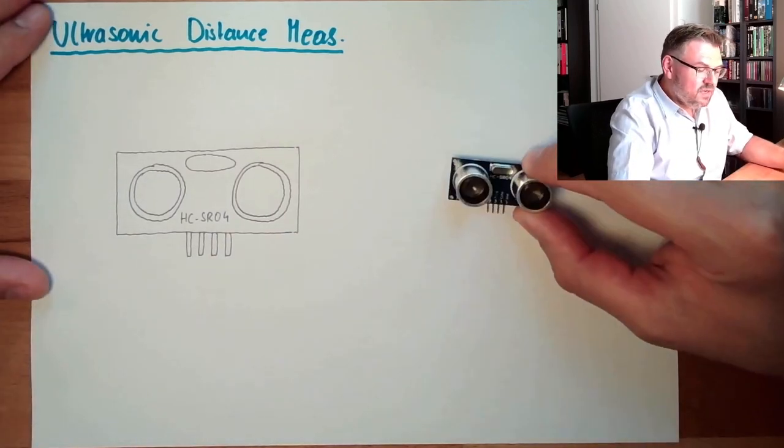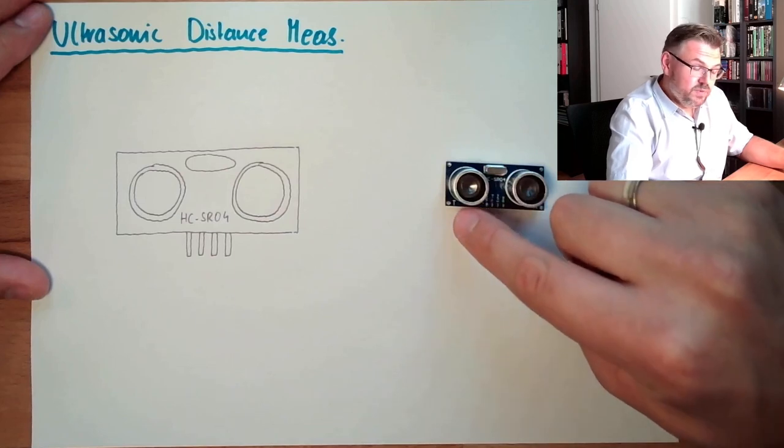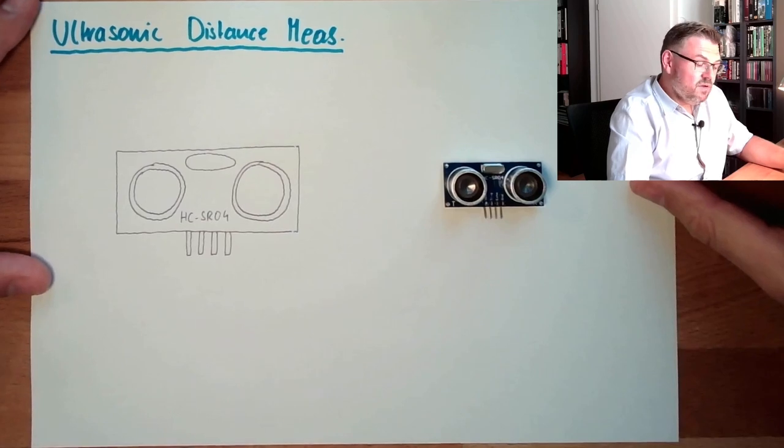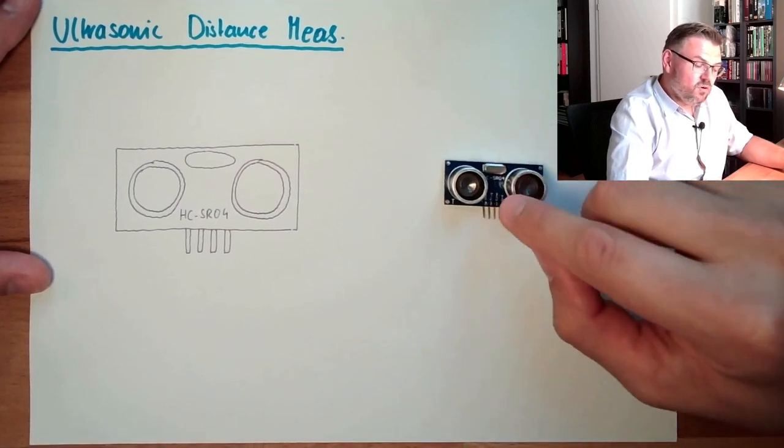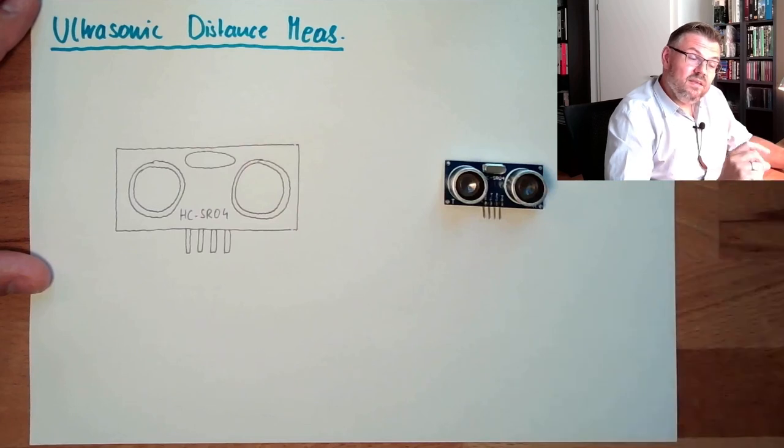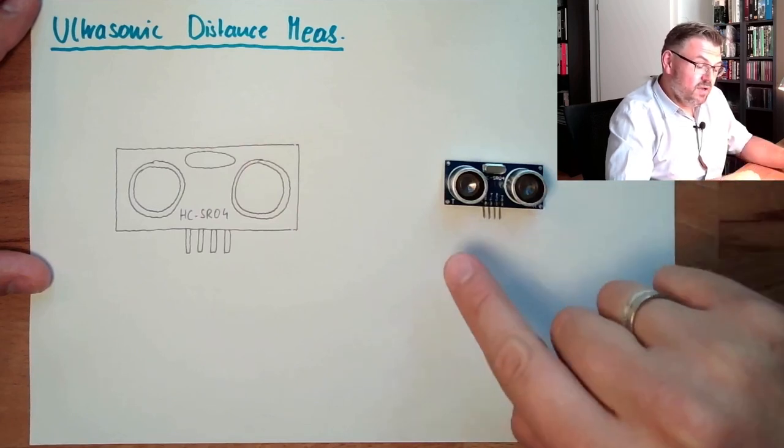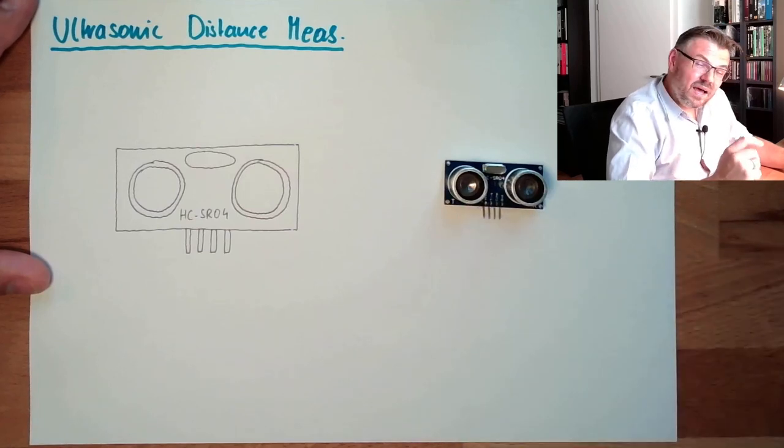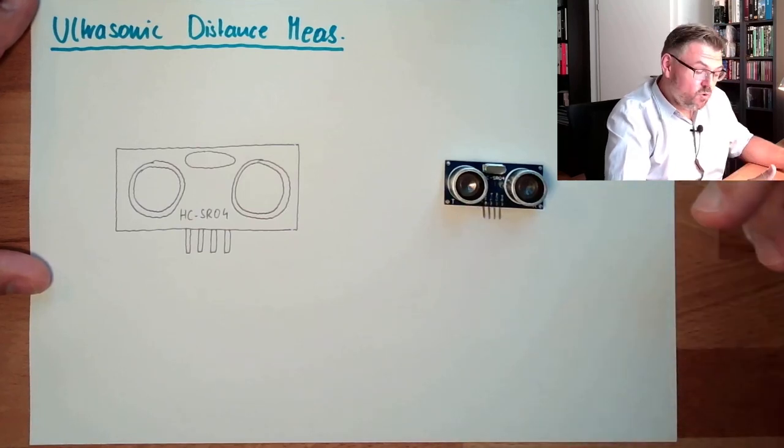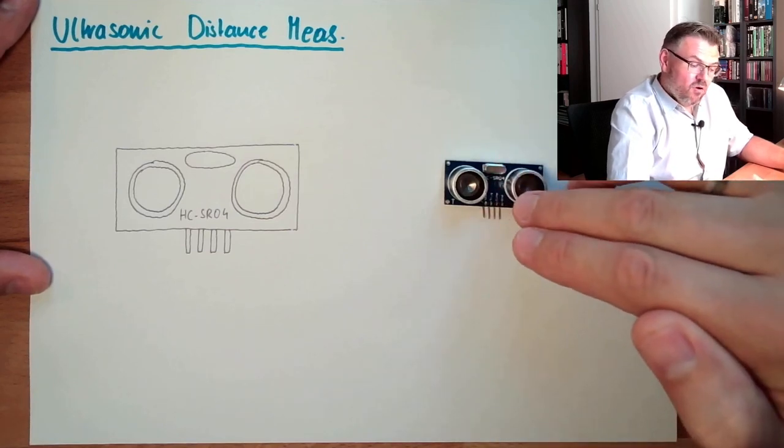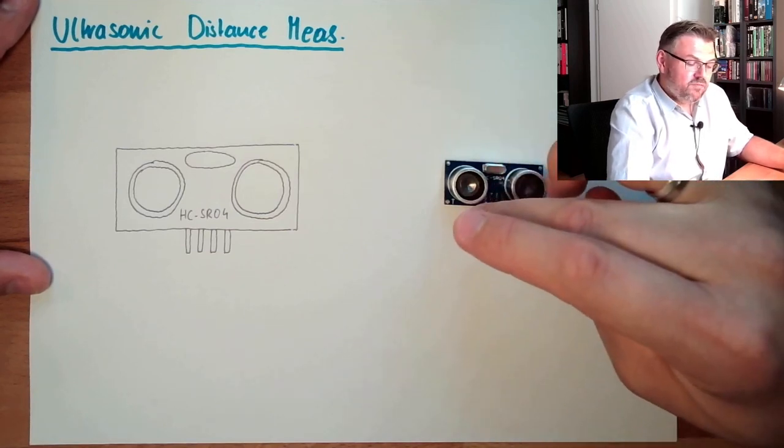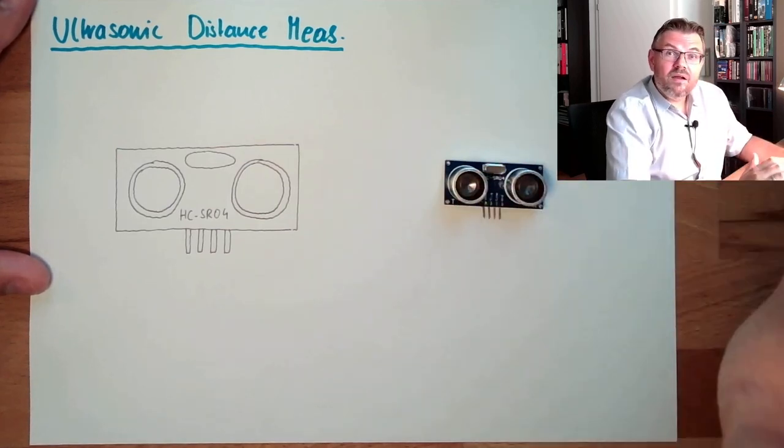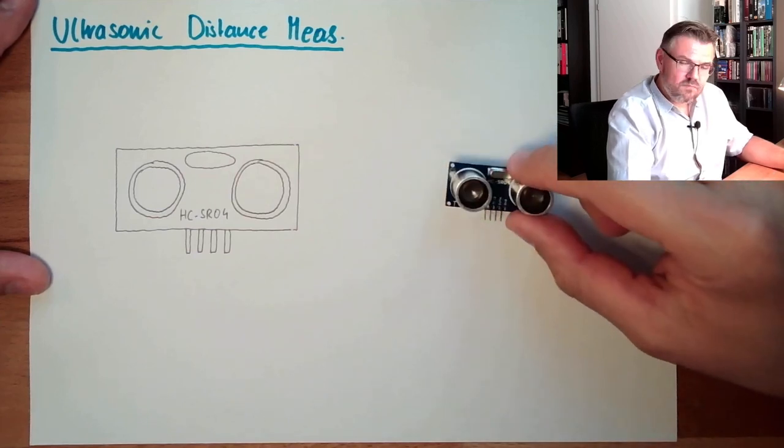This specific device does have one dedicated transmitter and one dedicated receiver. This is quite nice because some devices only have a combined transmitter and receiver. They need to switch. So the transmitter is transmitting something, and then the switch needs to have some time for switching it to receiving mode. And this is why a lot of those devices with a combined transmitter and receiver have a minimum distance which is quite far away, one meter or something like this.